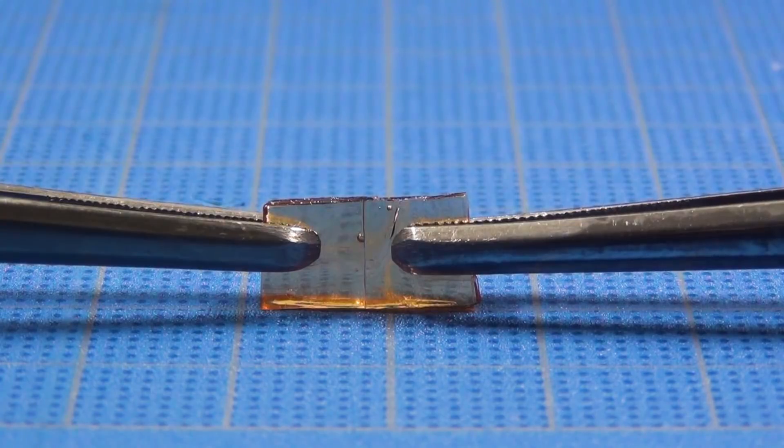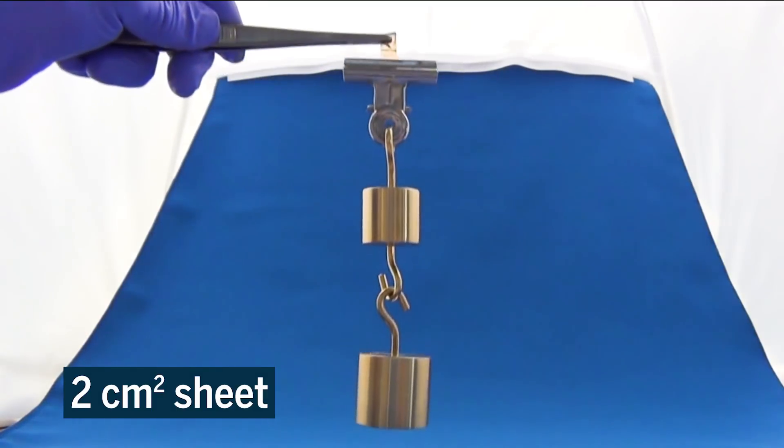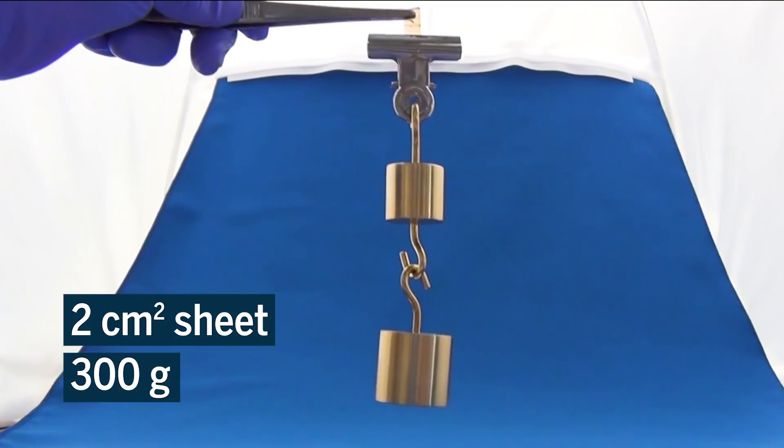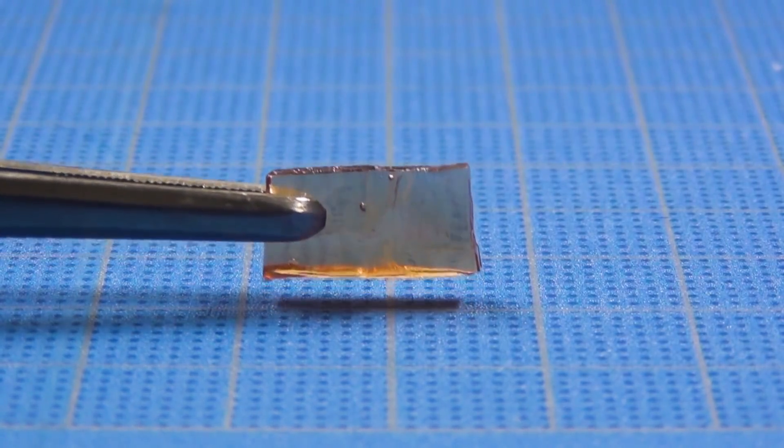After being cut and gently compressed for 30 seconds, a two square centimeter sheet can hold 300 grams of weight, roughly the same as a full can of soda, and the longer it's compressed, the stronger the bonds become.